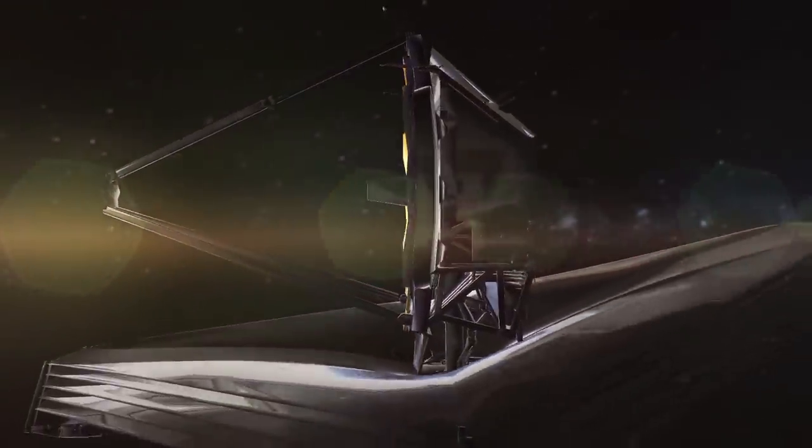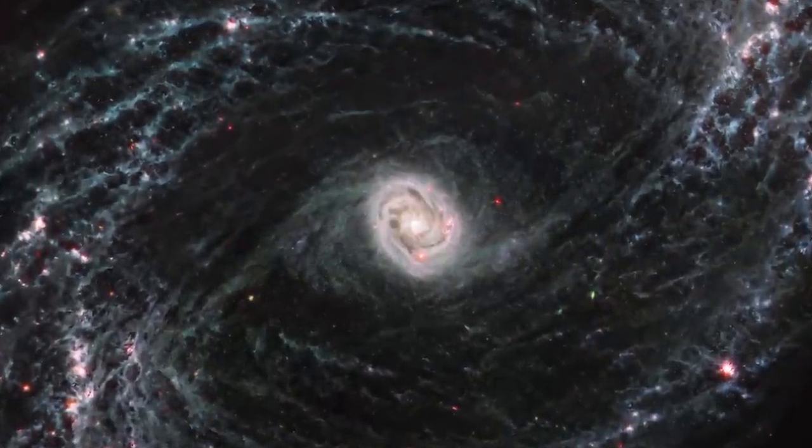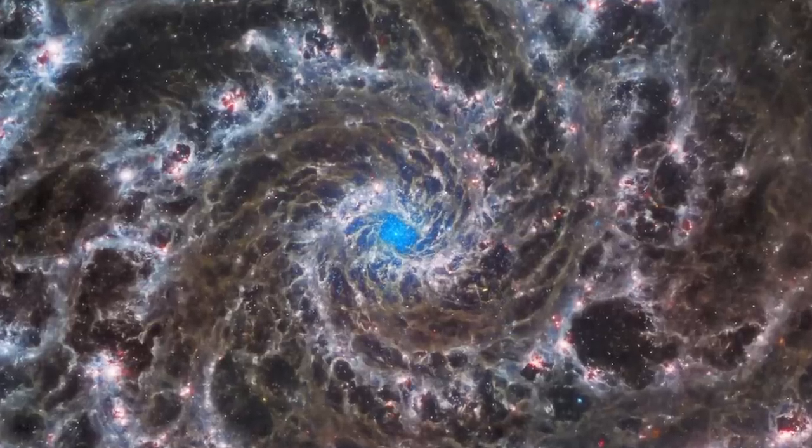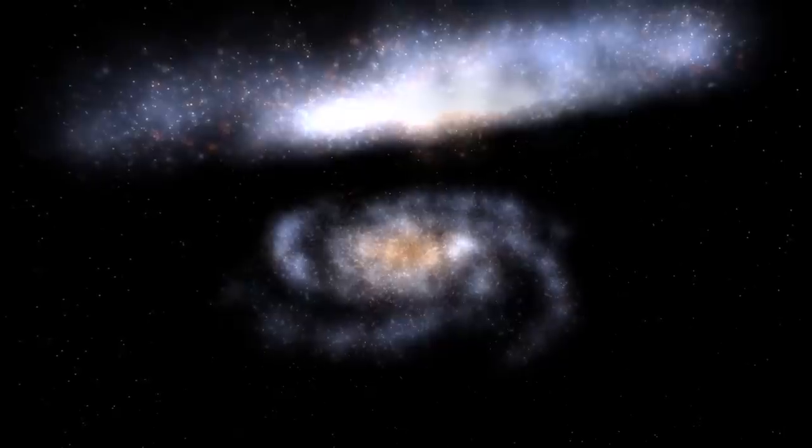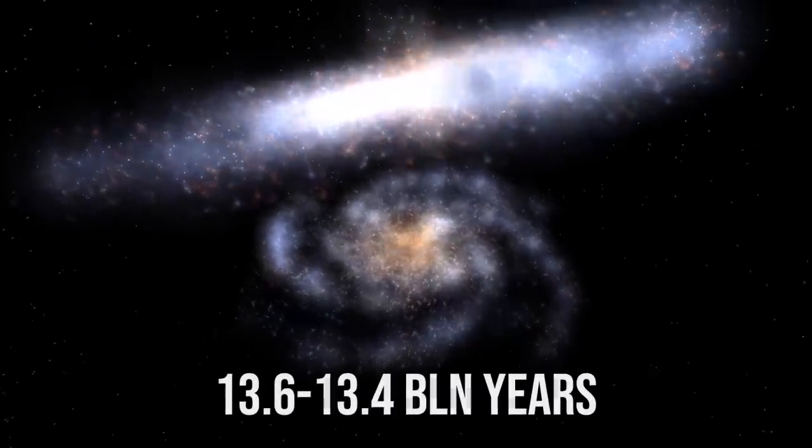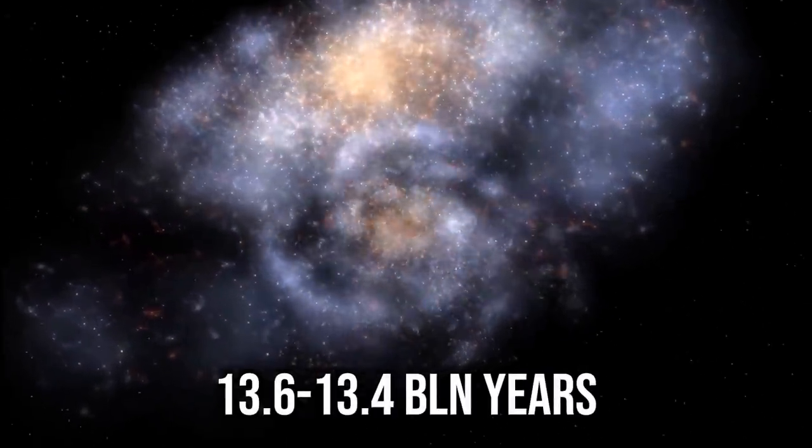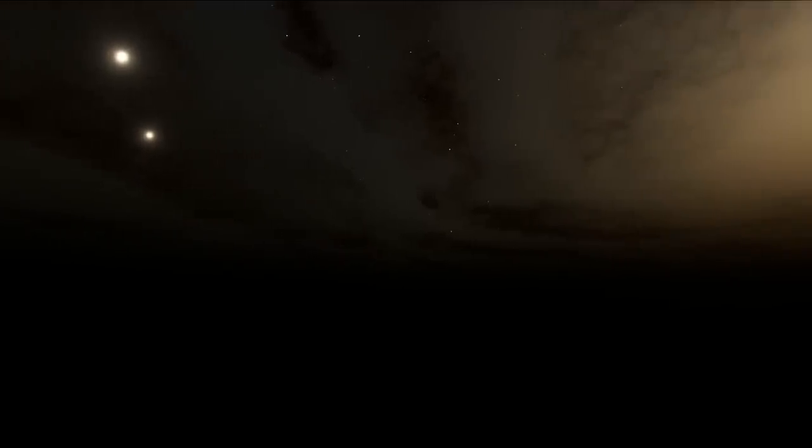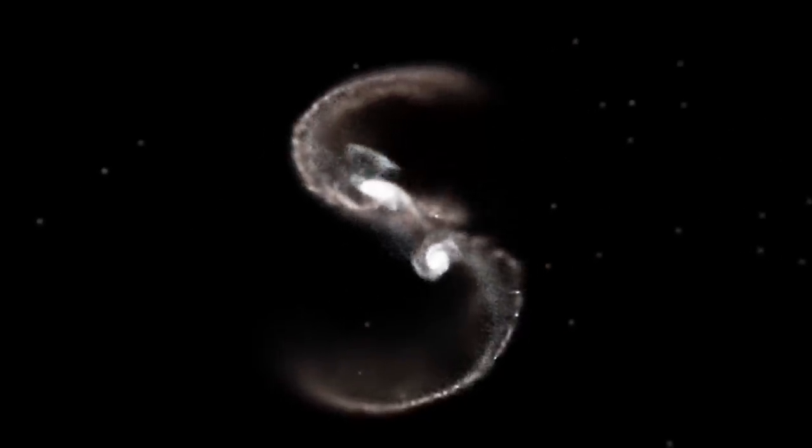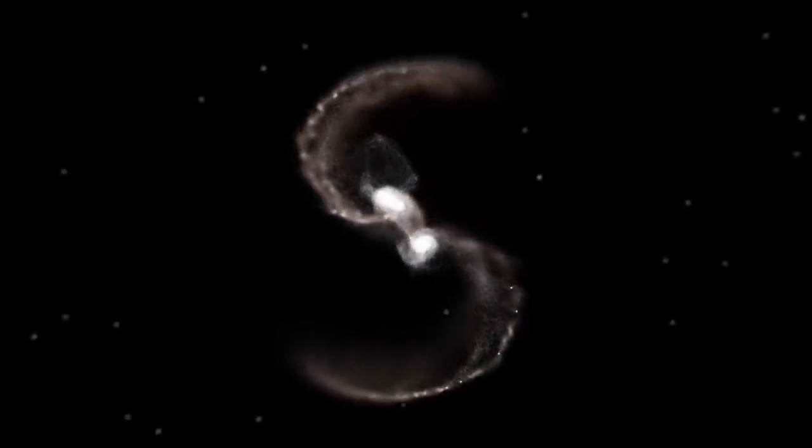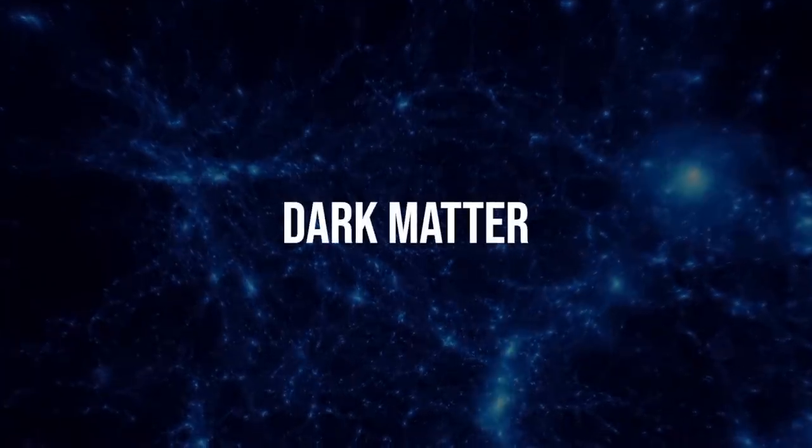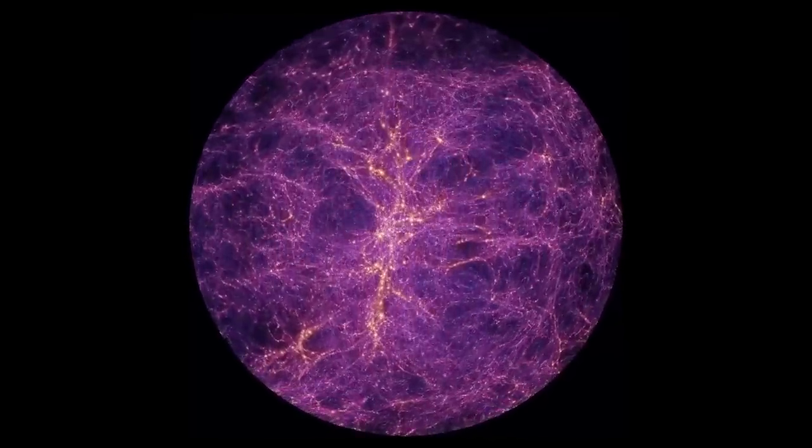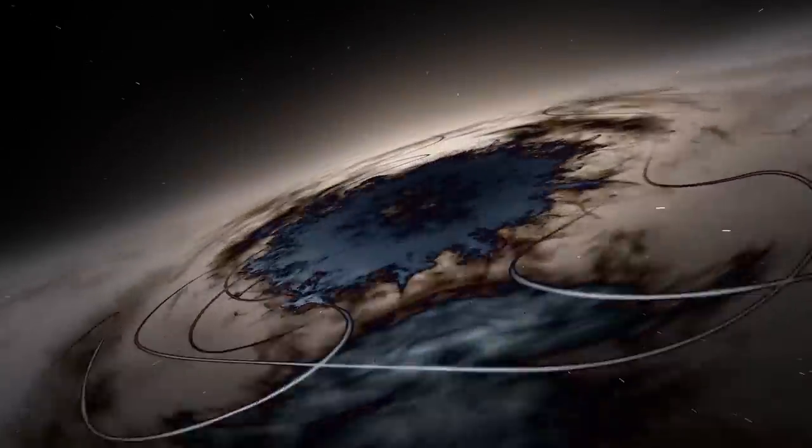But while searching for confirmation of galaxy evolution theories in the young universe, scientists stumbled across something that actually casts doubt on them. In its first year, James Webb captured dozens of the most ancient galaxies with their formed disks. These galaxies appeared somewhere between 200 and 400 million years after the Big Bang. But isn't that way too early for galaxies to have disks? And every time things don't add up in the galaxy evolution theory, scientists resort to their favorite method. They blame everything on invisible dark matter.